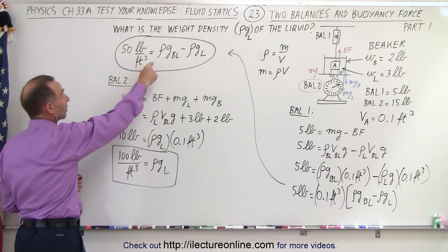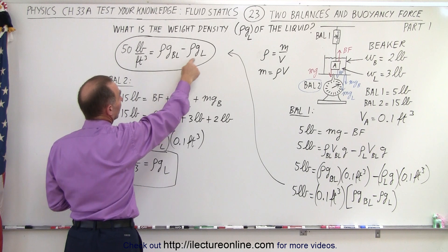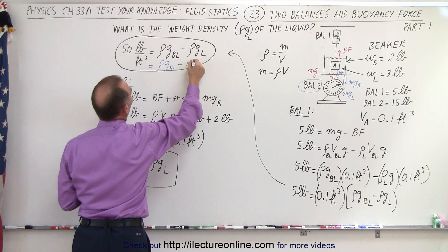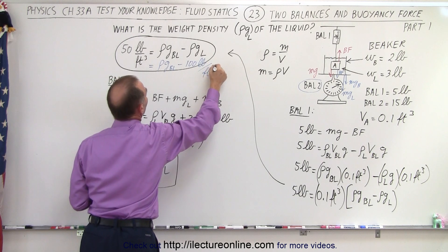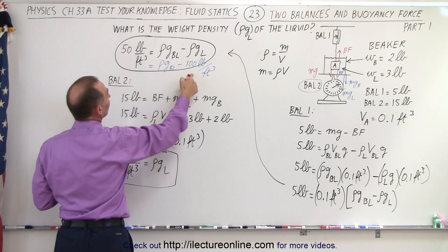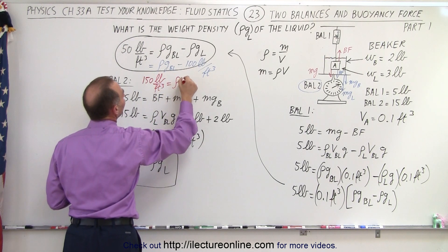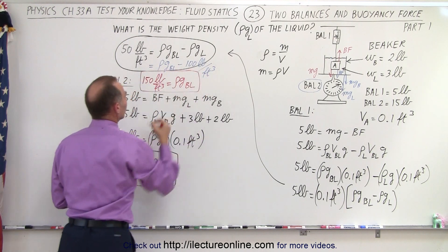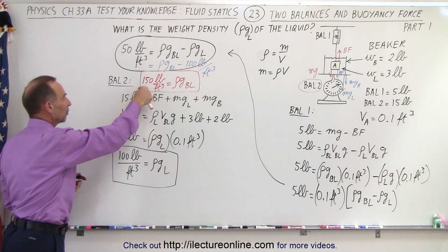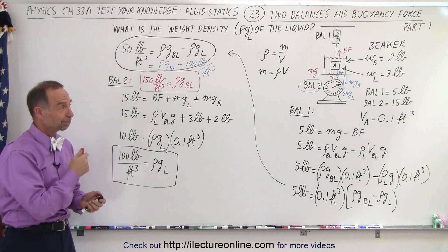Even though they didn't ask for it, we can plug 100 pounds per cubic foot back into the first equation: 50 equals the weight density of the block minus 100. Moving the 100 to the other side gives 150 pounds per cubic foot as the weight density of the block. So using both equations combined, the weight density of the block is 150 lb/ft³ and the weight density of the liquid is 100 lb/ft³. That is how we solve the problem.